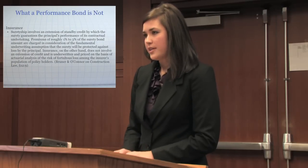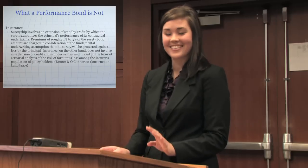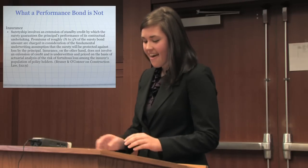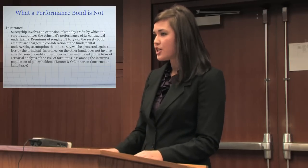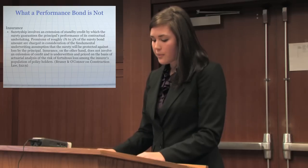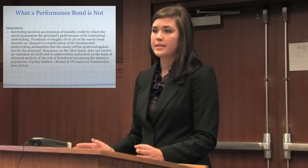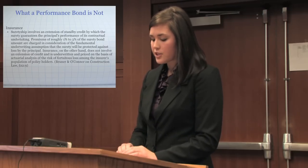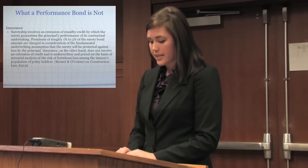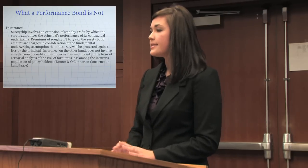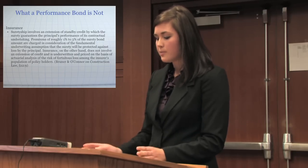A performance bond is not an insurance policy. An insurance policy has two parties — the insured and the insurer — and the insurer will pay the insured for any loss sustained due to a predetermined set of circumstances. However, in the surety agreement, there are three parties: the obligee, the principal, and the surety. The surety agreement extends safety credit in case performance is not completed, so it protects the owner by ensuring that performance will be completed.